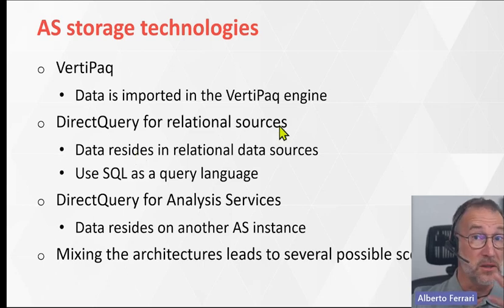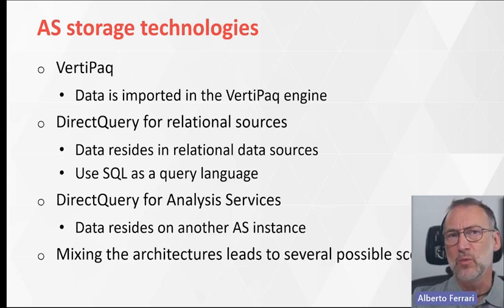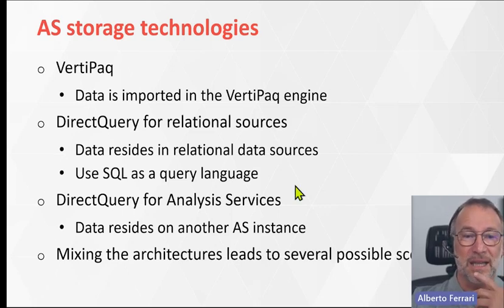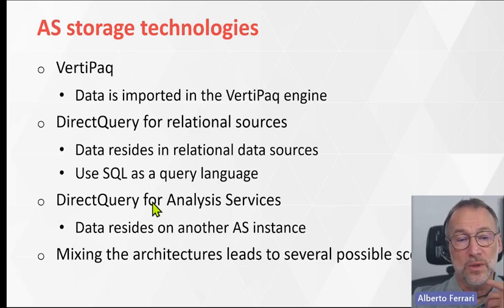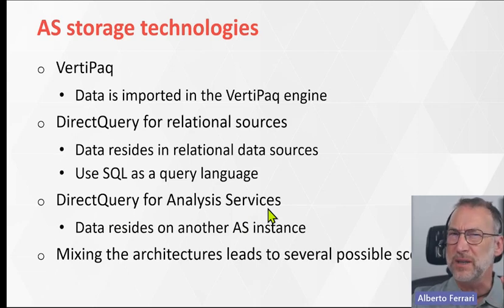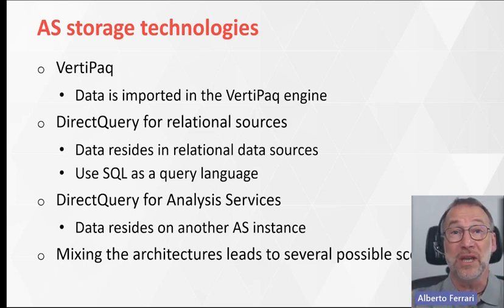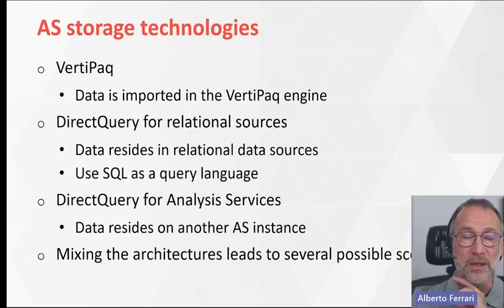You can use DirectQuery for relational data sources directly over SQL. In that case, data stays in SQL and every time you want data you run a SQL query. The advantage is no latency — the data is live. The disadvantage is speed — DirectQuery is not the fastest engine on the planet. There's also another way of using DirectQuery with an engine that was initially called DirectQuery for Analysis Services, but before going GA they decided to call these models composite models.